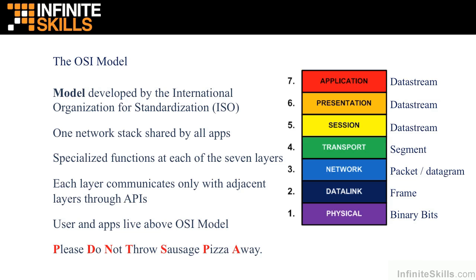The layers in order are: Physical, Data Link, Network, Transport, Session, Presentation, and Application. As shown on the slide, the top three layers keep information in a data stream, and then at Layer 4 of the OSI model, the Transport layer, we take that data stream and break it up into segments.